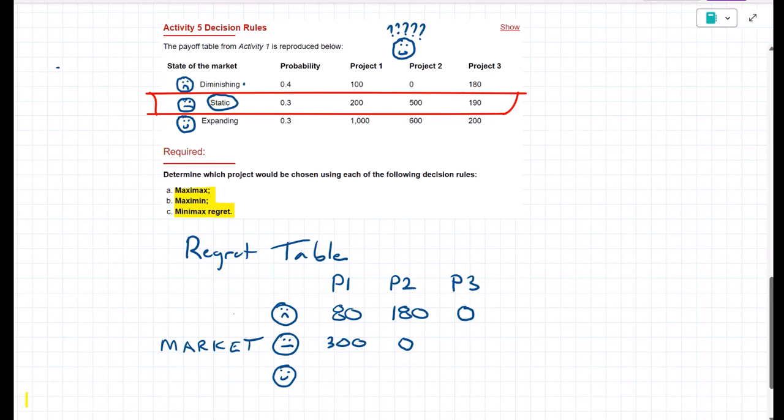Last but not least, for project three, that would be 310.